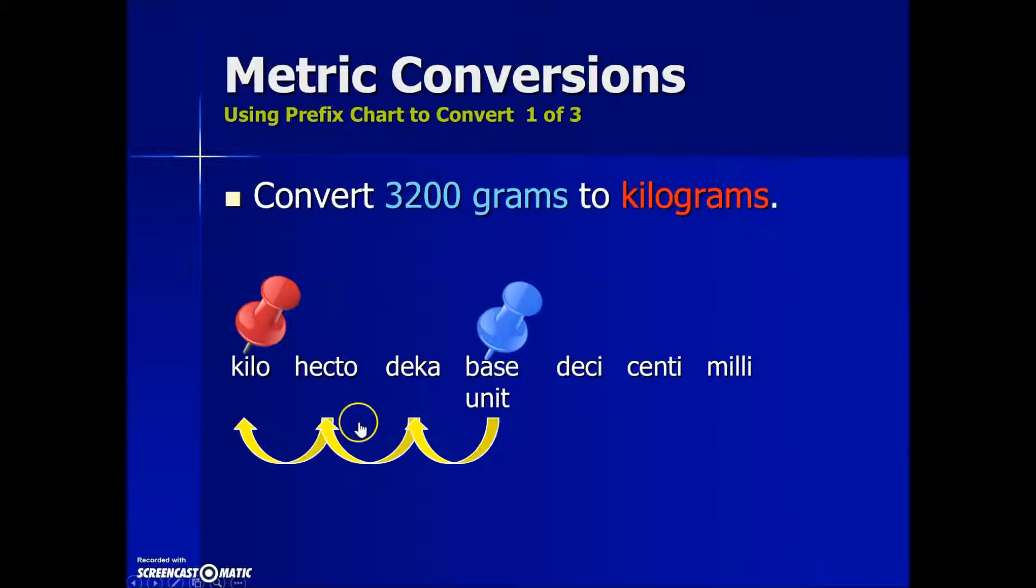Since each one of these prefixes represents a power of 10, deca is 10 times the base, hecto is 10 times deca and so on. This equates with our decimal place values as well. So we're going to take the given measurement. The understanding is that the decimal place of any number if it's not indicated is to the right of the last number. We're going to move that decimal place the same number of powers of 10 that our prefixes represent to go from the given grams to the kilos. So we're going to move our decimal one for deca, two for hecto, three for kilo in the same direction on our number. So the decimal place is one, two, three. The new place is between the three and the two, which gives us the equivalence of our grams in kilograms, 3.2 kilograms.